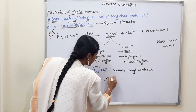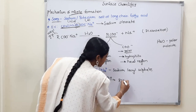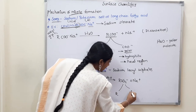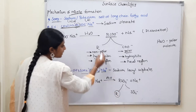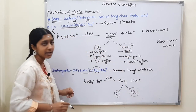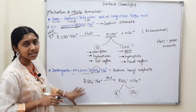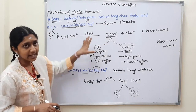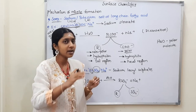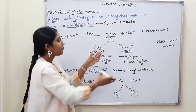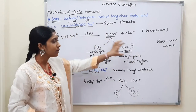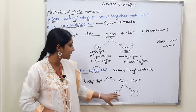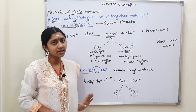So for soap or detergent, these are the structures — the compounds behave the same way. The positive Na⁺ and negative ion separate. The R group is non-polar — this is the non-polar tail, and the charged end is the polar head. This is hydrophobic and hydrophilic. The tail region and the head region — that is how we split soap or detergent.